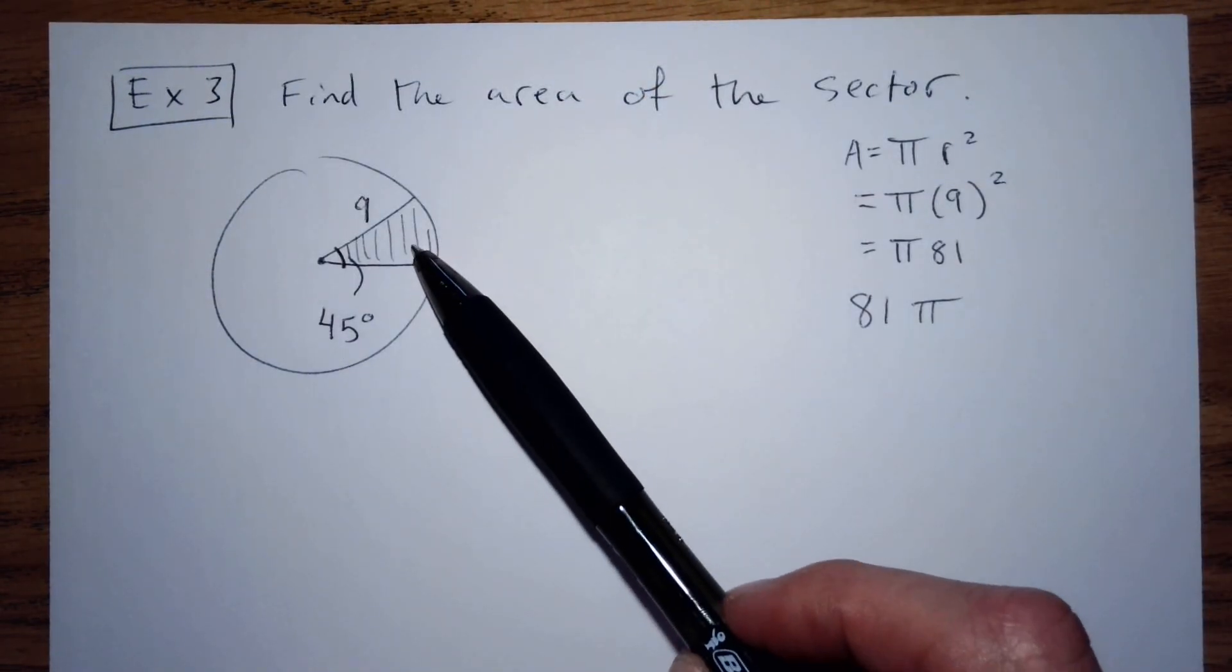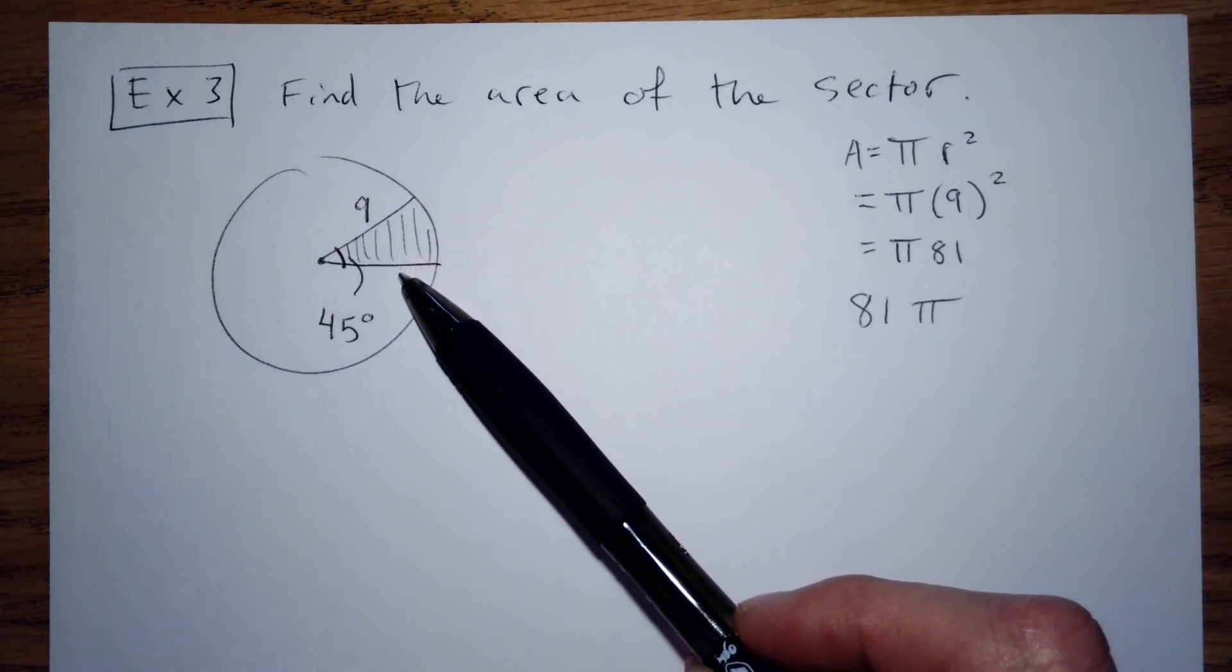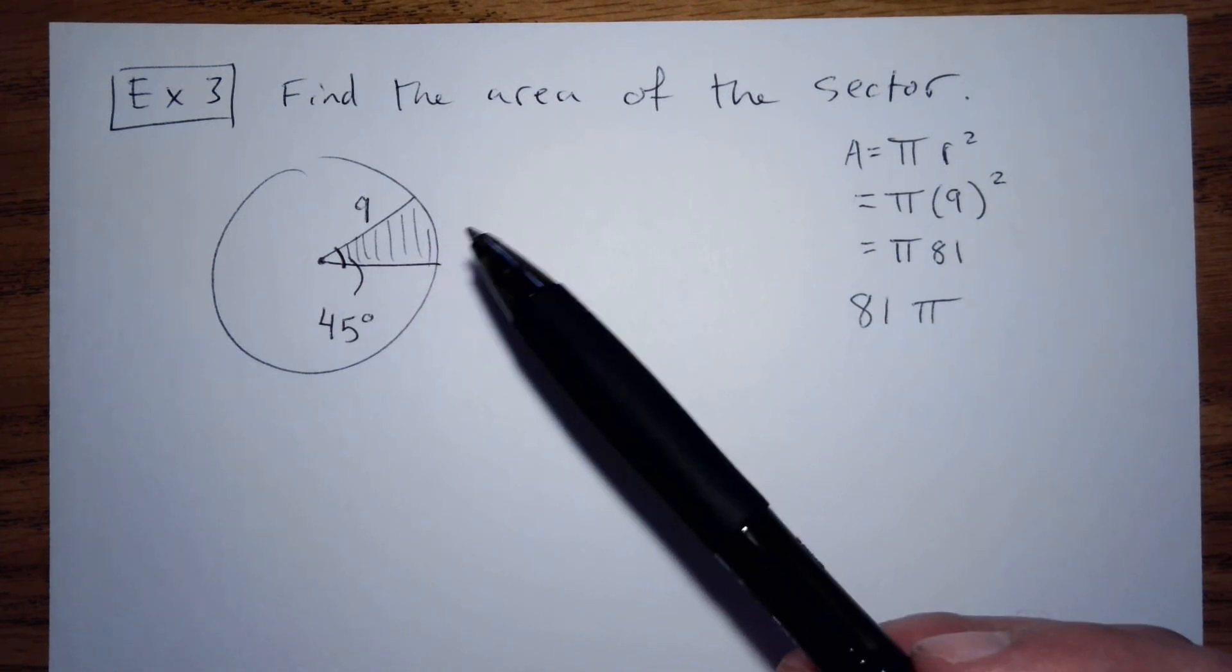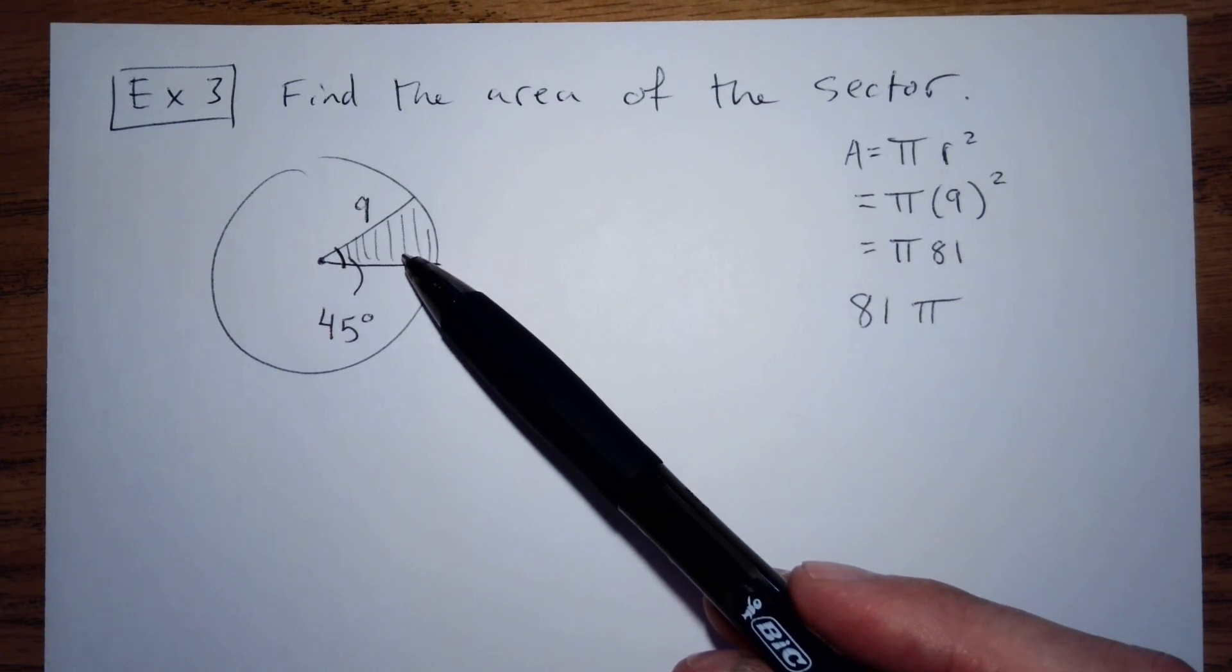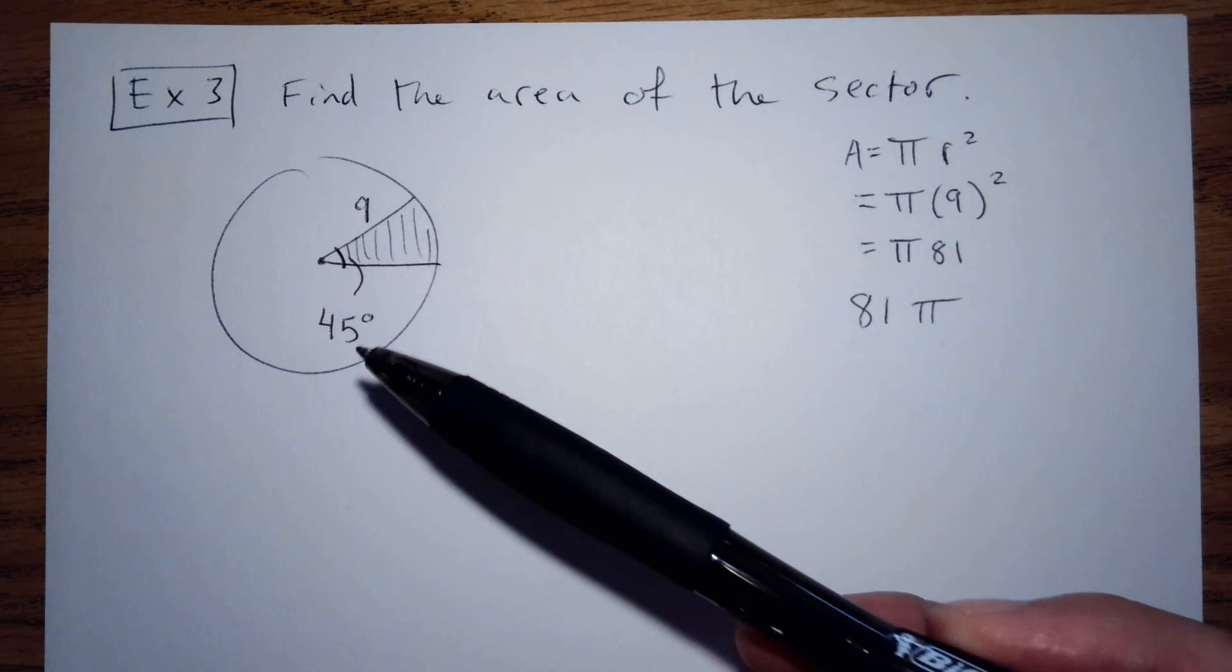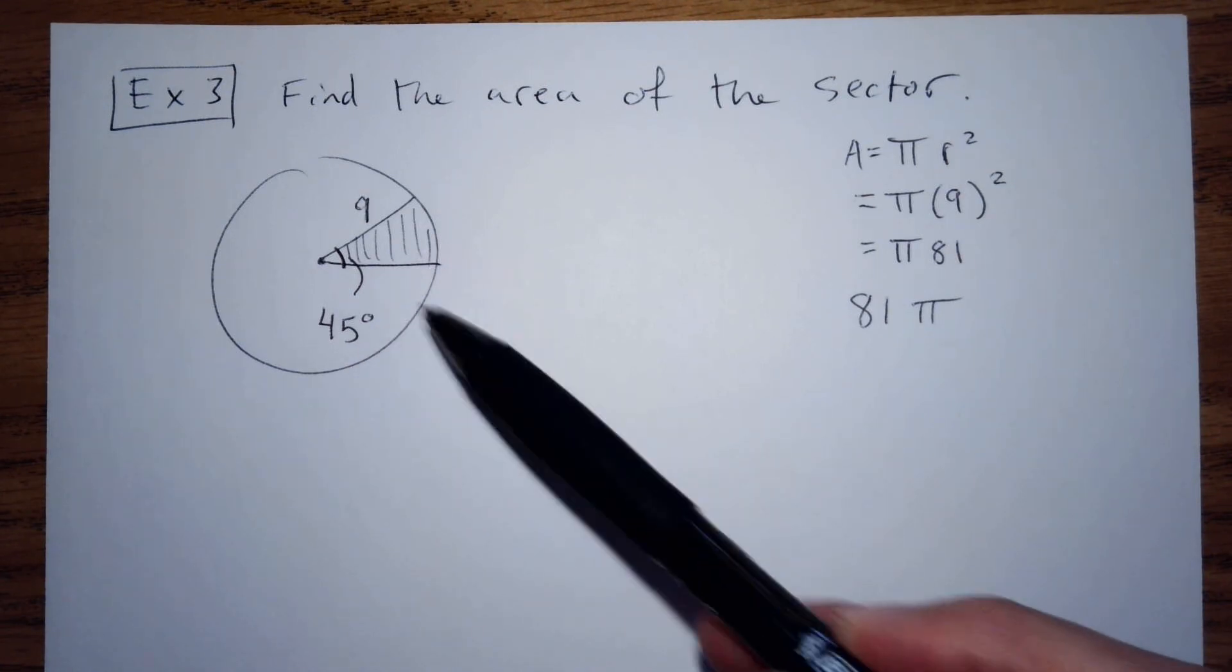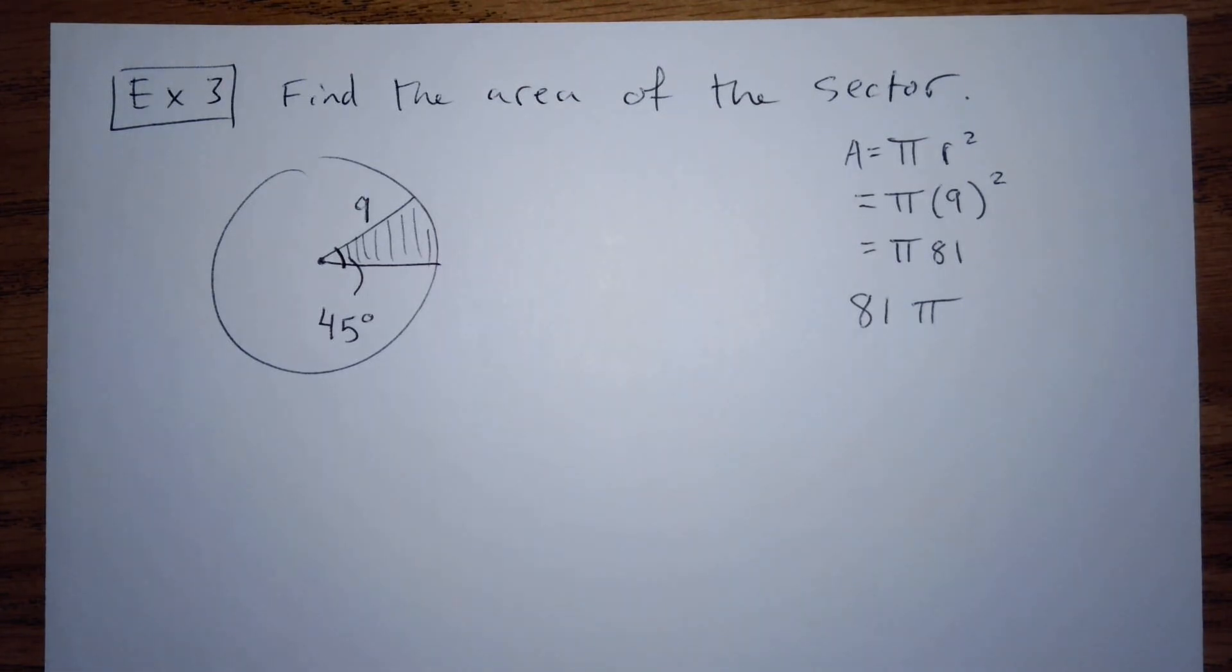Bigger than, equal to, or smaller than a quarter of the circle? It's definitely smaller than a quarter. It's smaller than 0.25 of the circle. But we don't know exactly how much smaller. Actually, you can kind of figure that out. It's 0.125, I'm thinking.